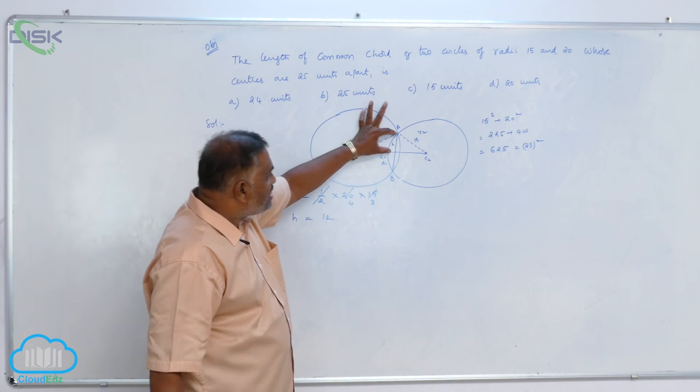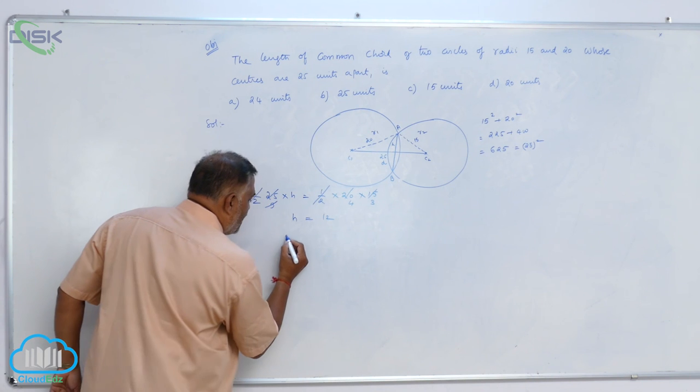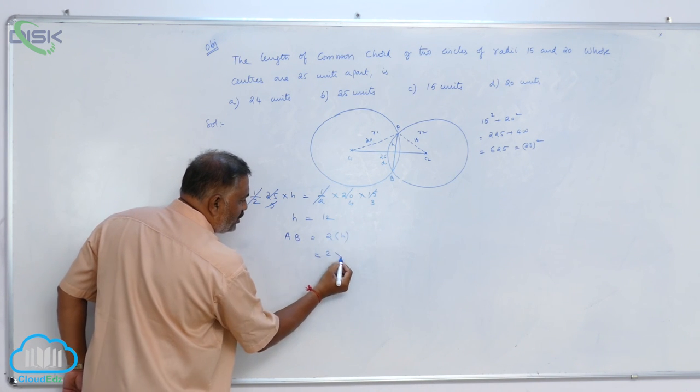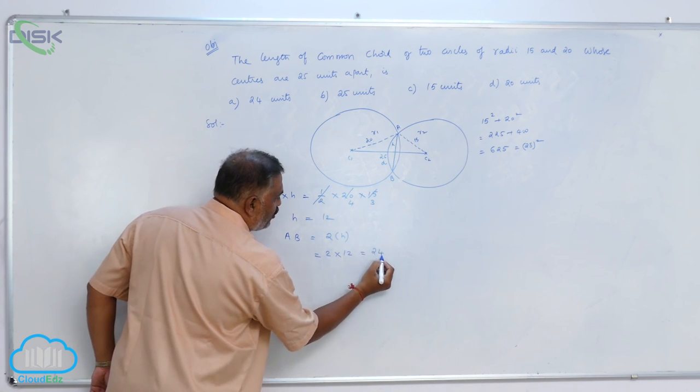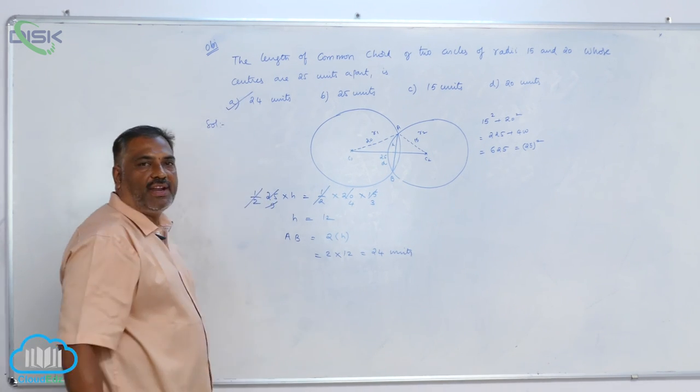H is this distance only. We require AB. So AB is equal to 2 times H, 2 into 12, that is 24 units. So according to the problem, A option is correct.